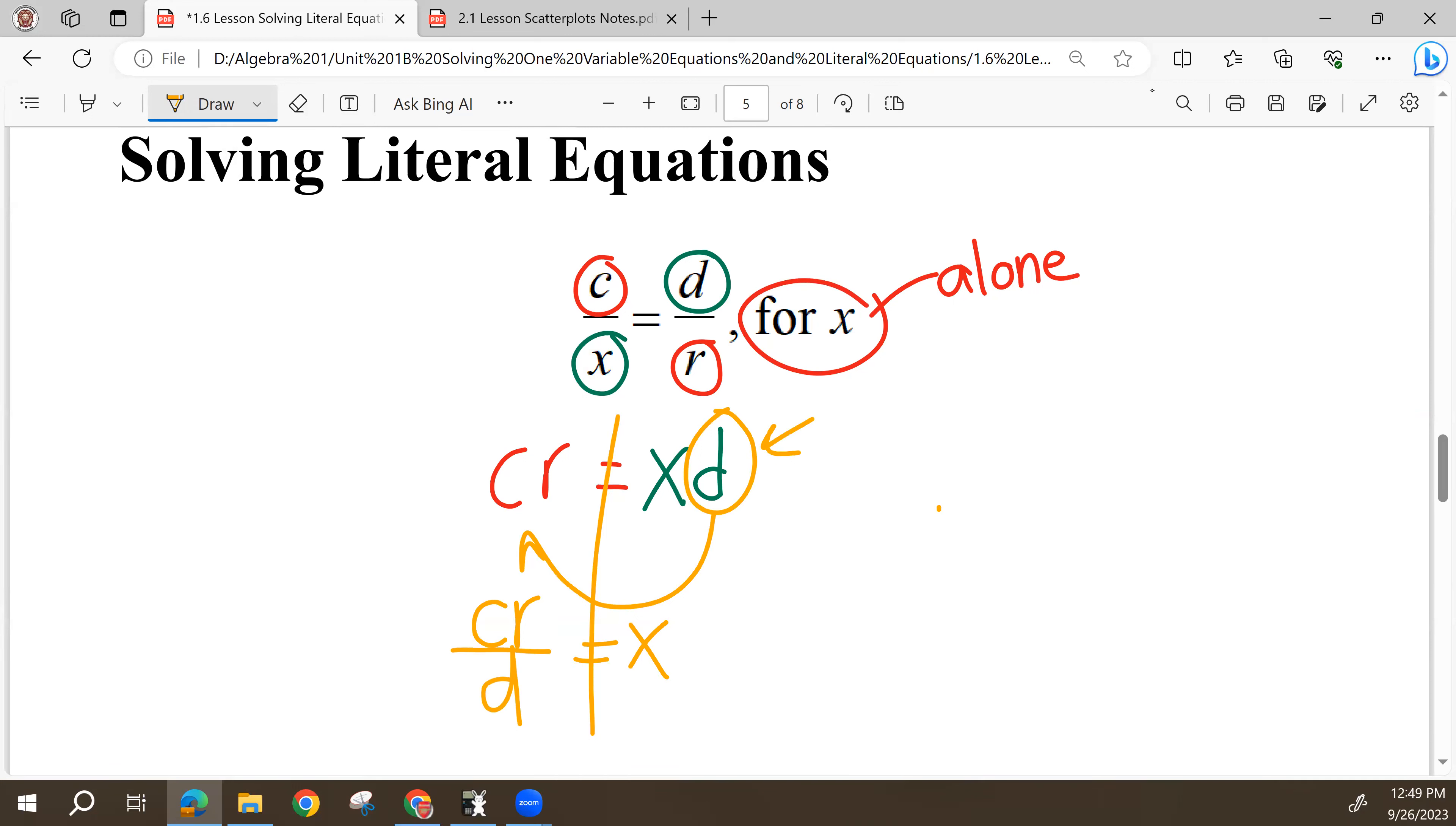It's going to do the opposite thing. When it was over here, it was multiplying. When I move it to the opposite side of the equal sign, it's going to be dividing, doing the opposite operation. We have X alone. And so we've solved this equation.